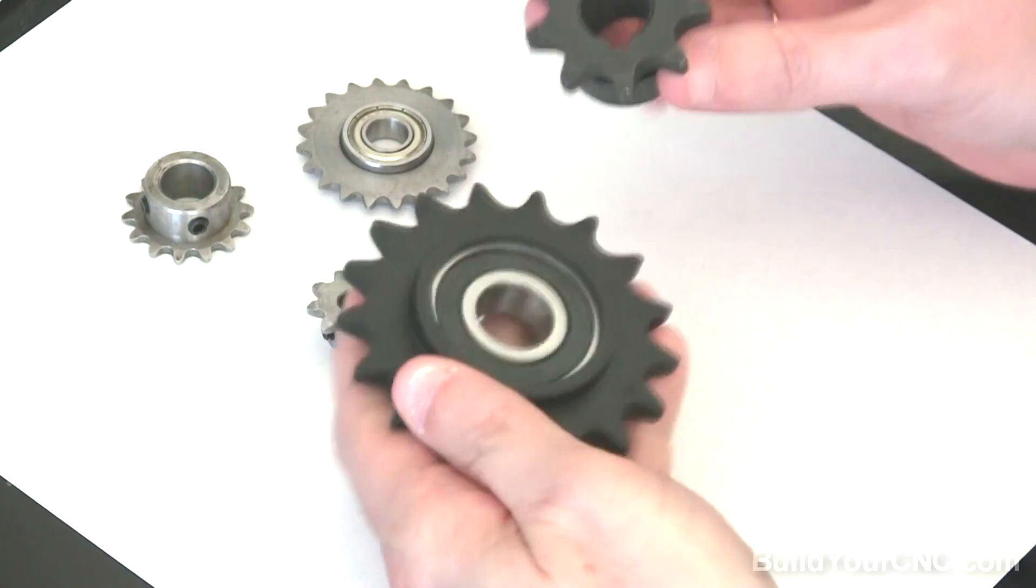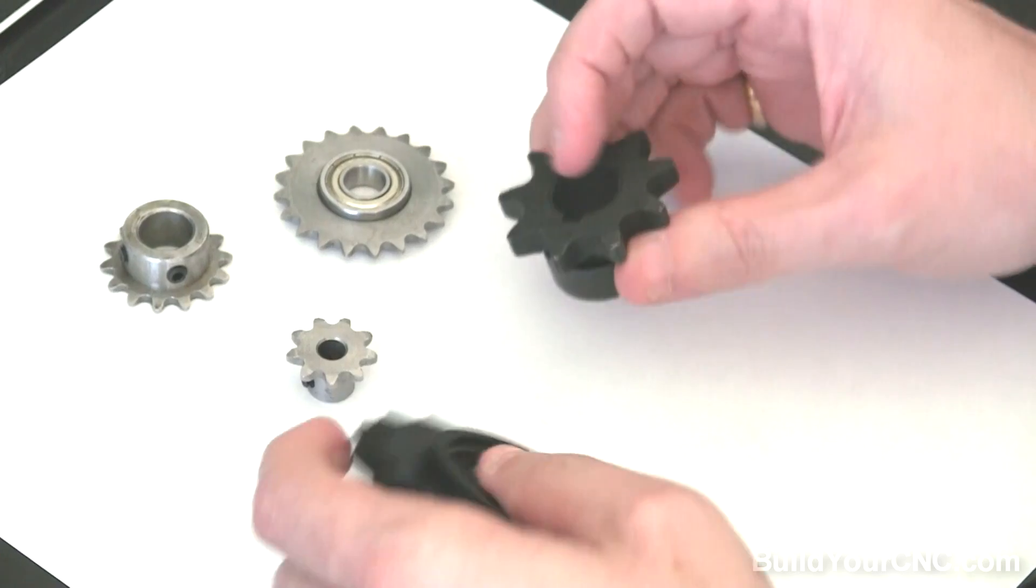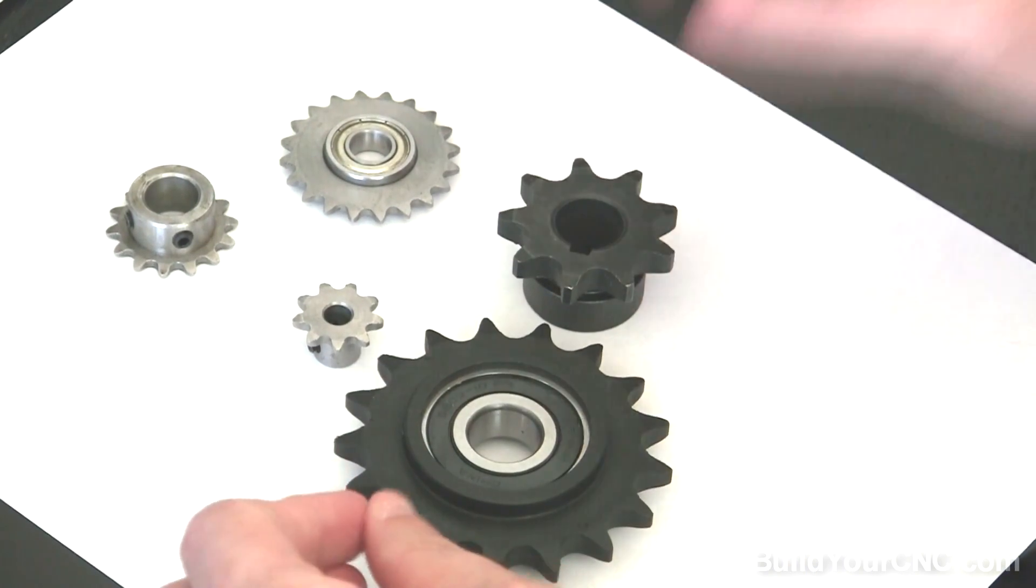The larger sprockets, like these, would be in a high torque situation. So you could chain that really needs to have the strength to hold up under a lot of stress and tension.